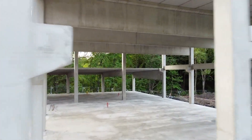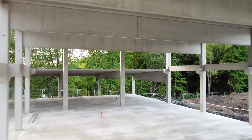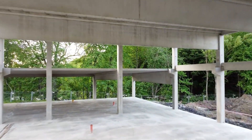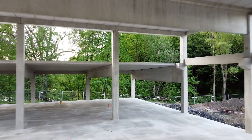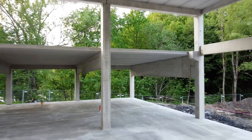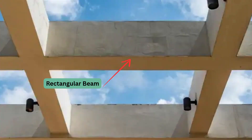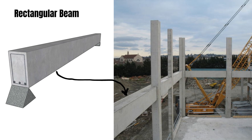In structural drawings and construction site discussions, the term 'normal beam' usually refers to a rectangular beam. It's a straightforward and time-tested option — easy to construct, simple to reinforce, and reliable for most applications.